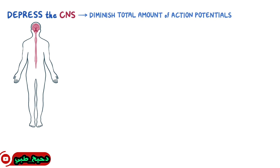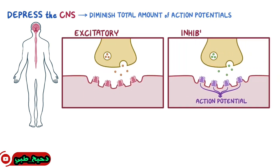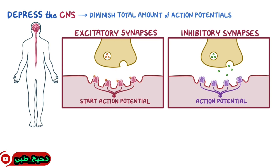The generation of these action potentials depends on excitatory and inhibitory synapses. Excitatory means that the neurotransmitters released into the synaptic space stimulate the postsynaptic neuron to start an action potential. The main neurotransmitter involved is glutamate, which binds to postsynaptic NMDA receptors, so some general anesthetics work by blocking these receptors.